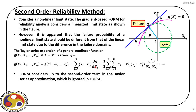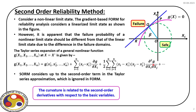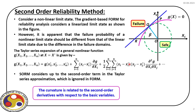In the second order approximation we consider up to second derivative terms, so we include the first three terms on the right-hand side. How the curvature in the third term with respect to basic variables affects the estimation of probability of failure is the central theme of this discussion. If the curvature is very low, a first order approximation is fine and second order won't contribute much. But as curvature increases, its effect on reliability analysis becomes more pronounced, requiring a second order reliability model.